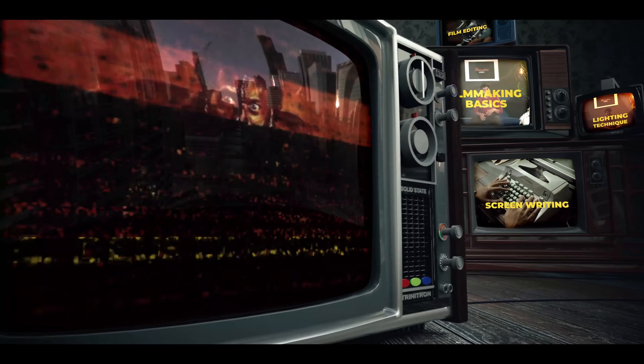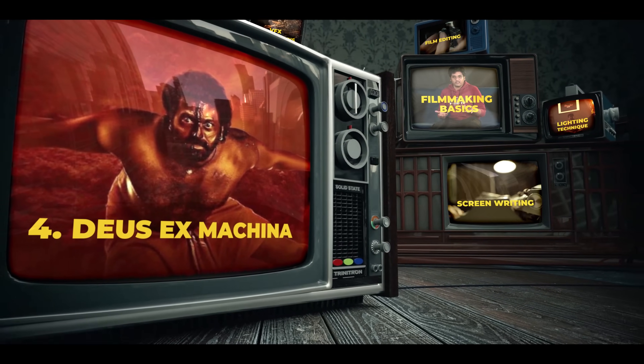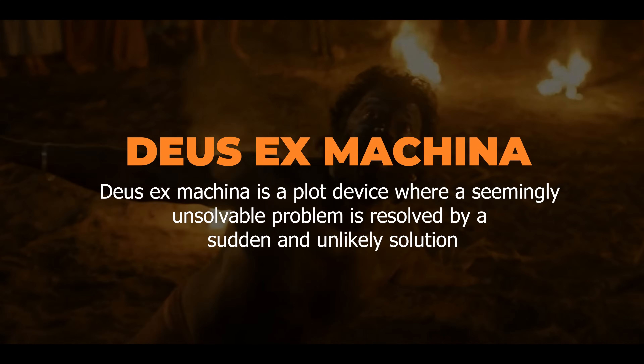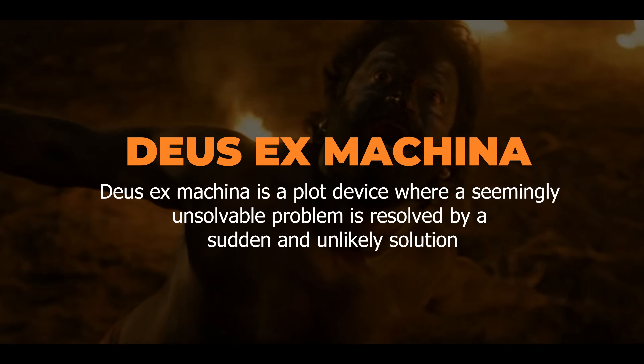Point number 4: Deus Ex Machina. This particular plot device involves a character in the film. If characters face conflict or any pattern of struggle, without an external force or character intervening, the character resolves it internally — that is Deus Ex Machina. Basically, in mass and commercial cinema, we use this technique for elevations. This is one technique that works perfectly.